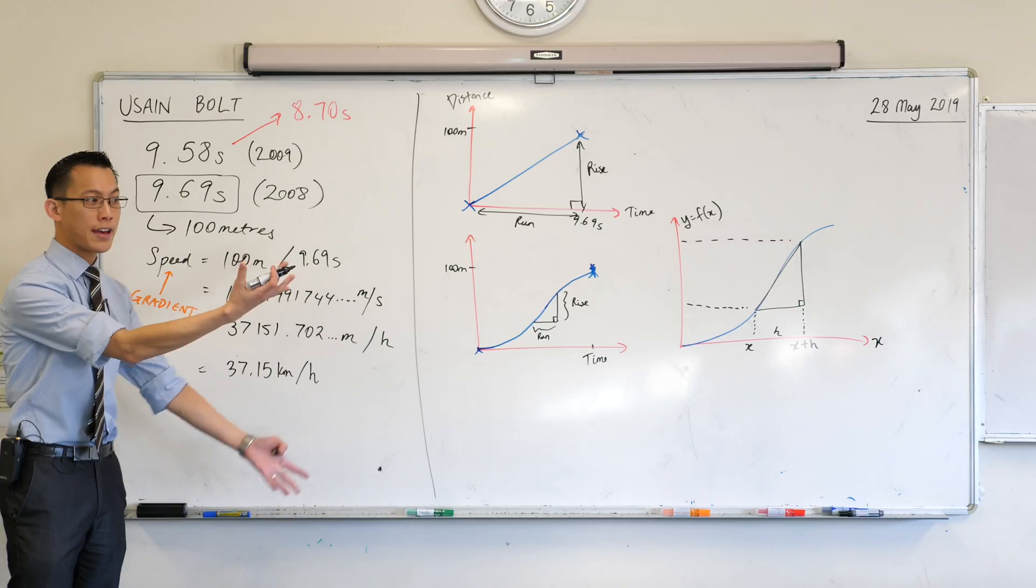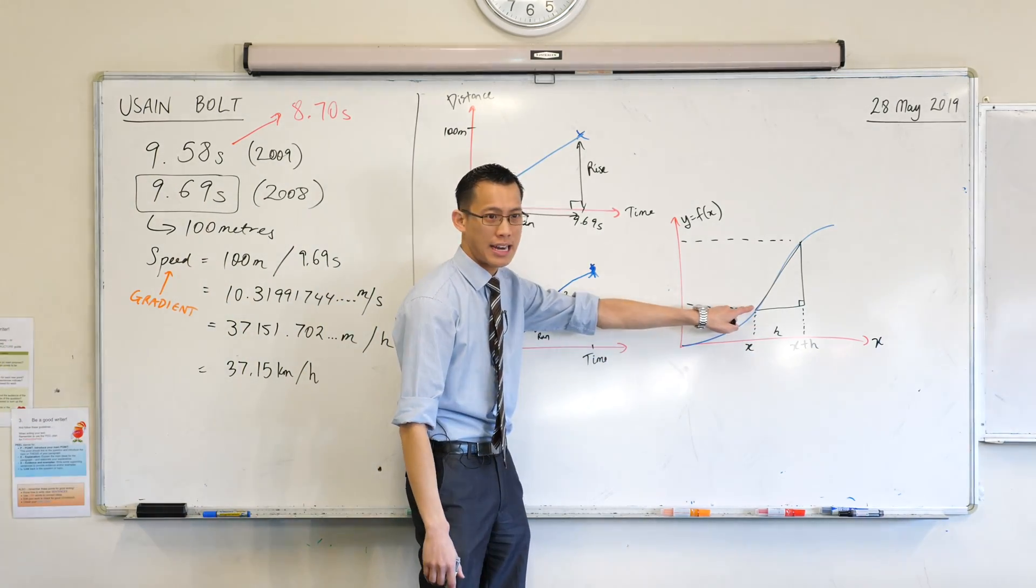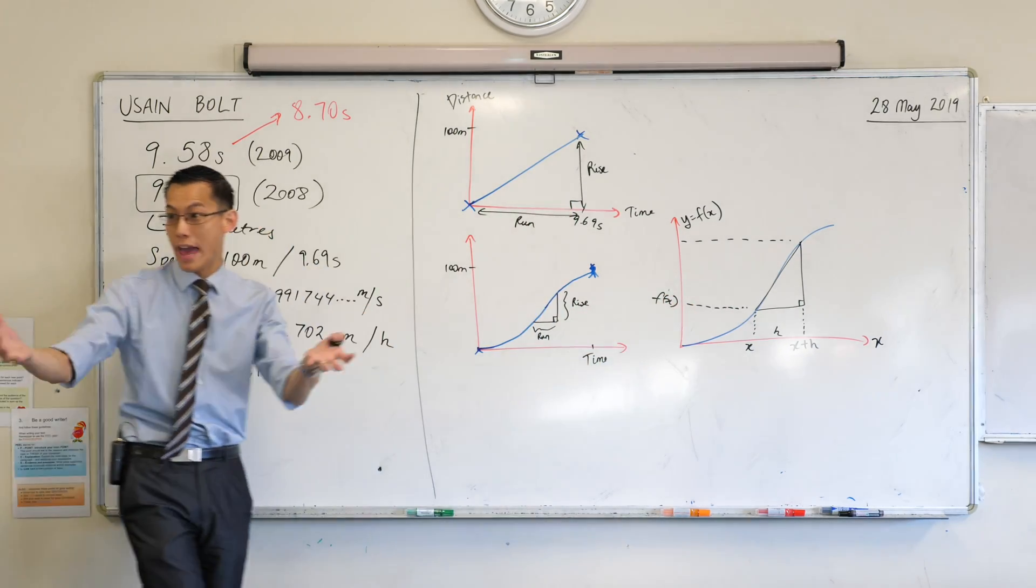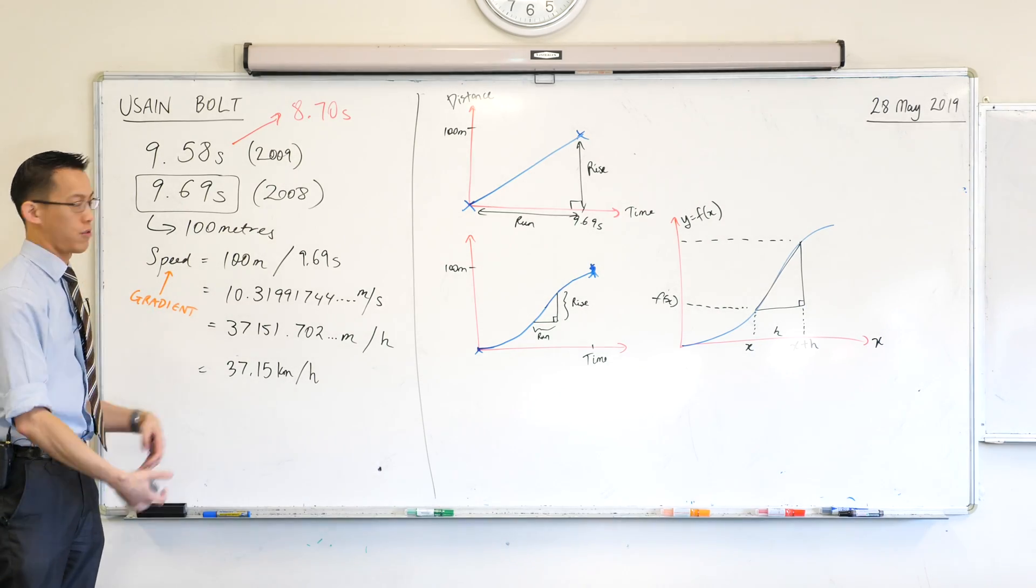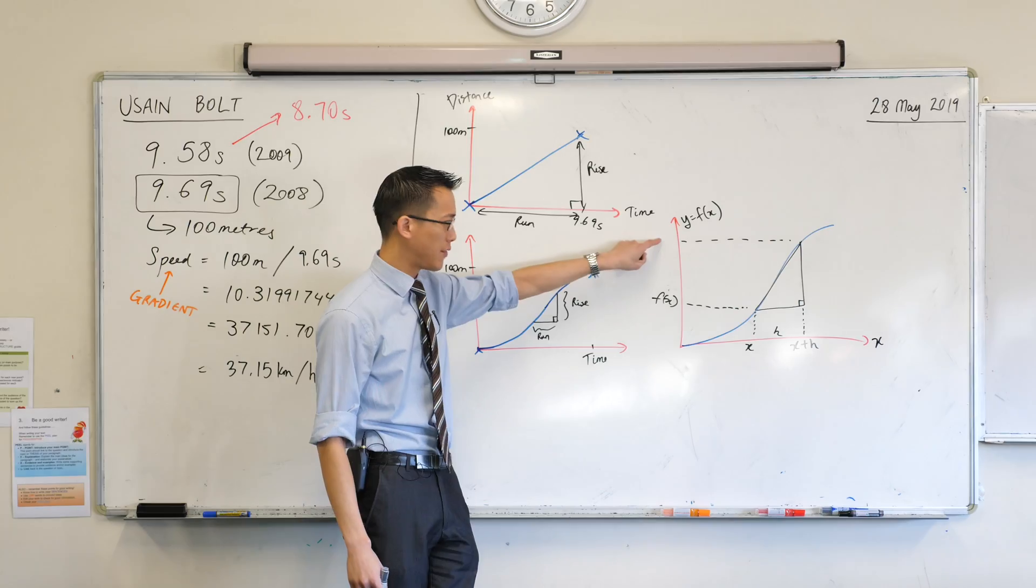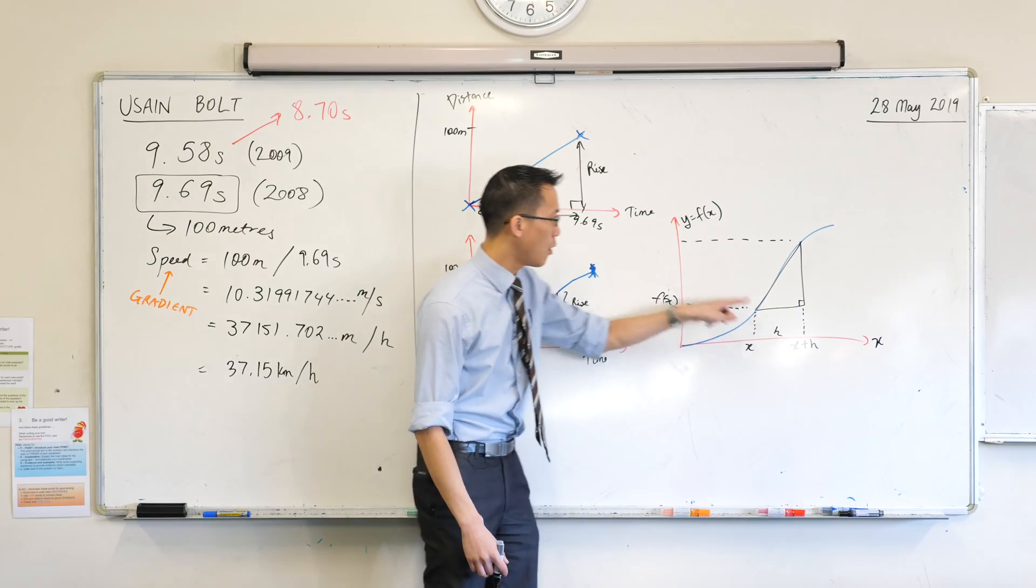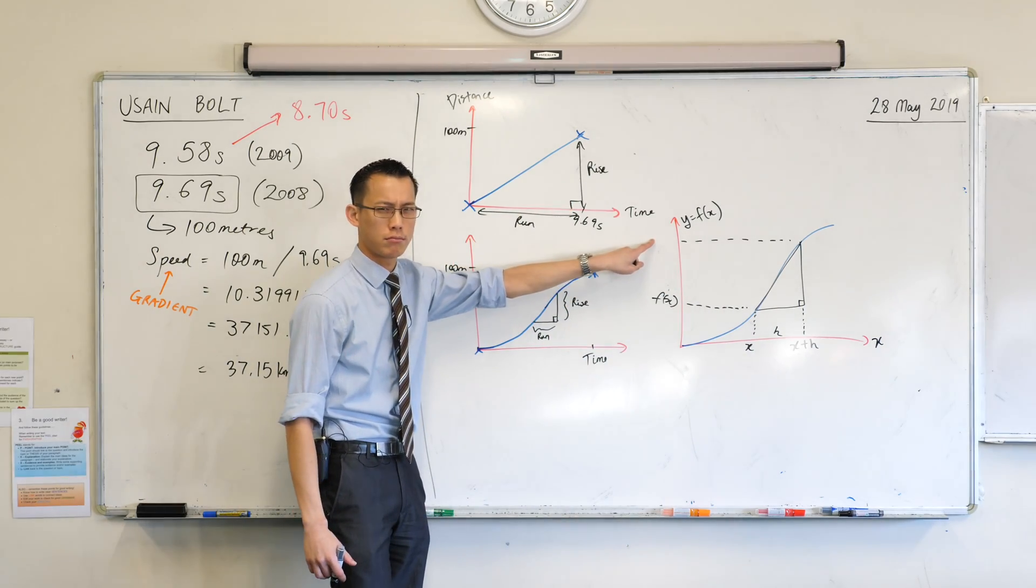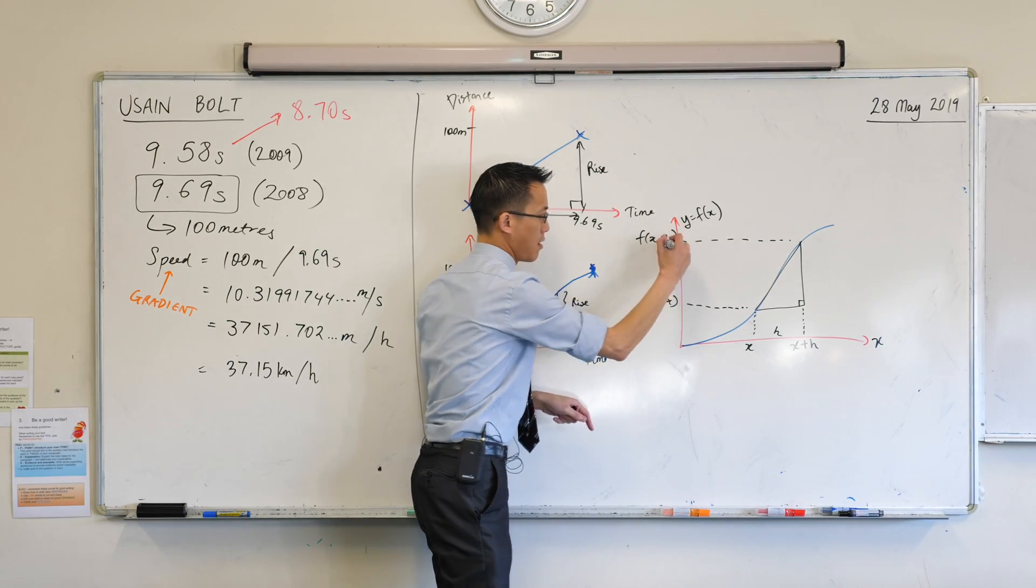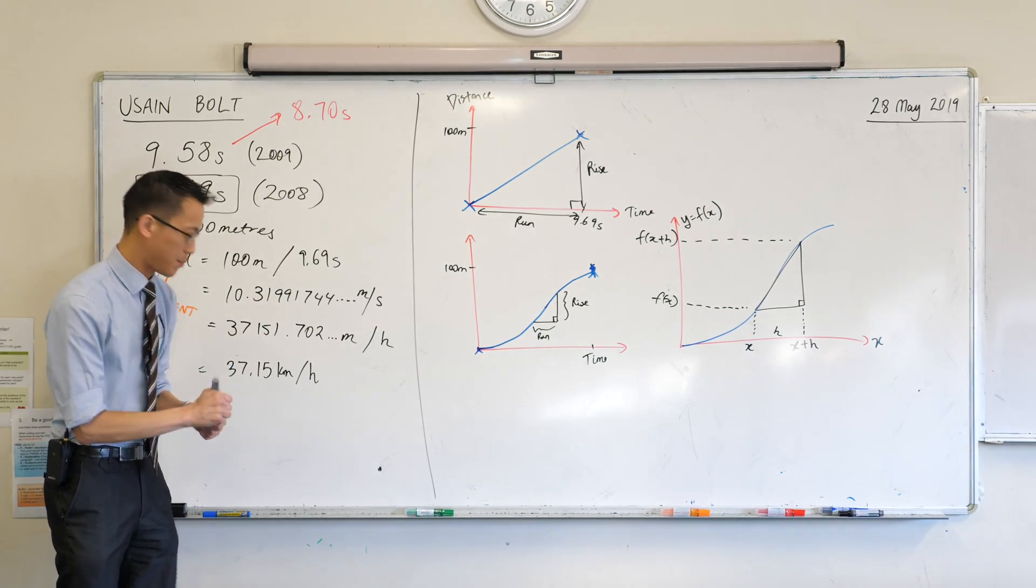Now, this is f of x, this blue function. So if you put in x, what y value should you get out of that? It should be f of x, whatever your f is. It could be a trig function, or it could be a parabola, or who knows. What about this value up here? This function value comes from a different horizontal coordinate. So when you put this value in, what will you get up here? f of x plus h. Very nice. So, this is all of the numbers, all of the values that I need to work out my rise and my run.